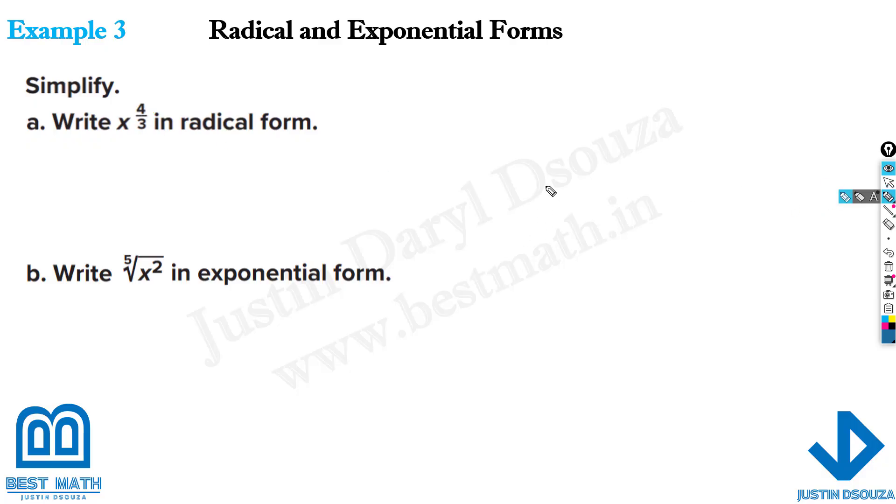Similarly we'll solve these: x to the 4 thirds. What's happening? How do we write it? X, whatever is up will be the power, but the root will be radical, having whatever is down. And what about this one here? X power 2 divided by 5 would be the correct form.